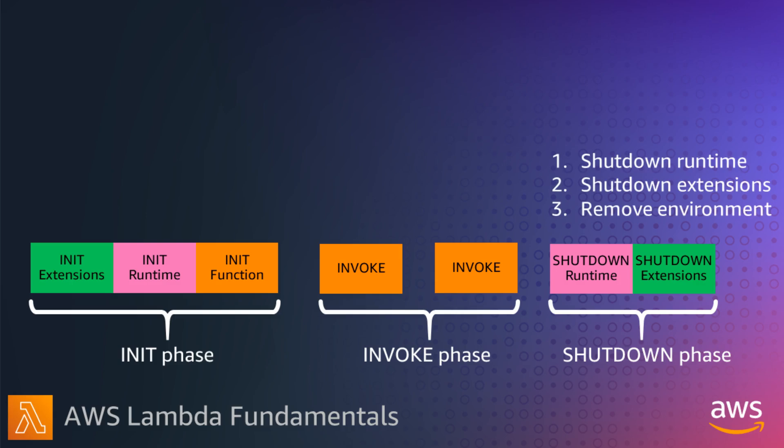If the Lambda function doesn't receive any invocations for a period of time, the shutdown phase happens. Lambda shuts down the runtime. It also sends a shutdown event to each extension so they can finish any cleanup operations. Then Lambda removes the execution environment.